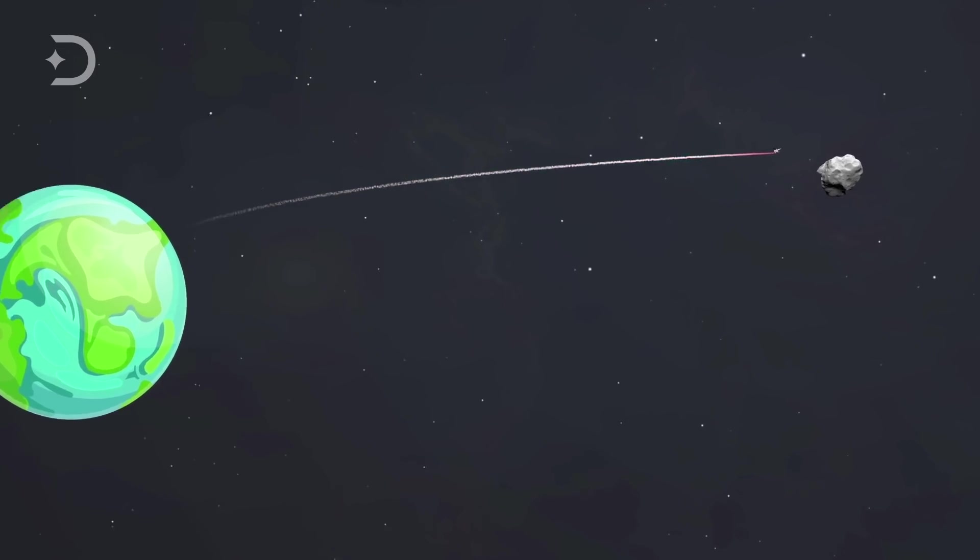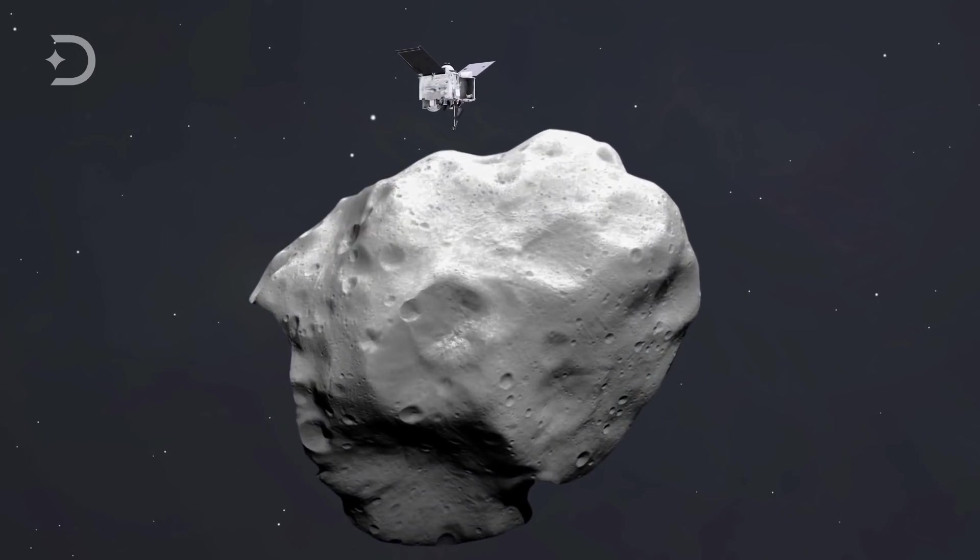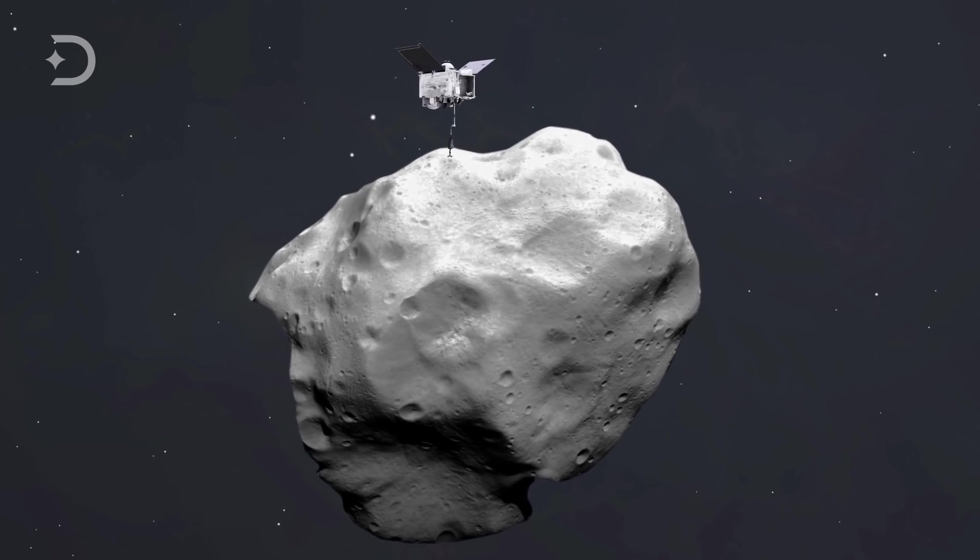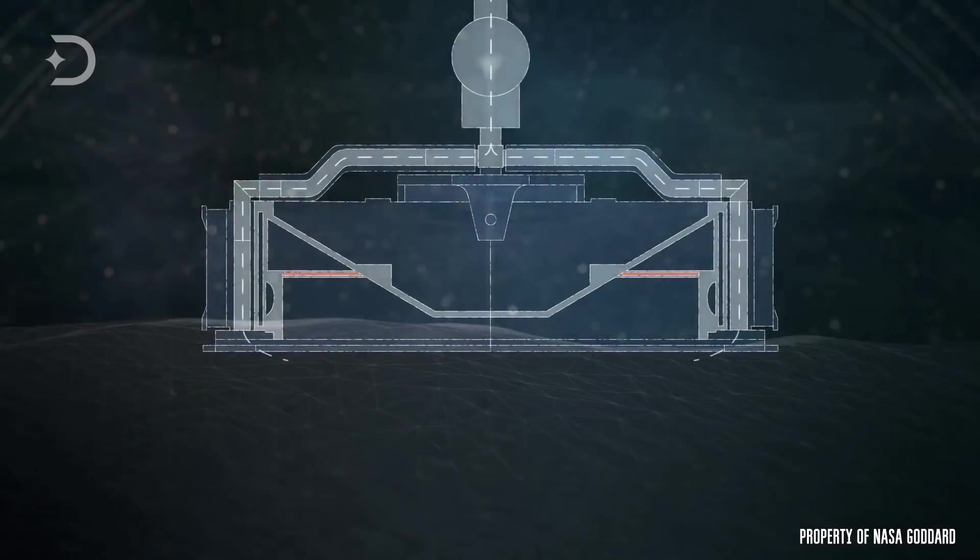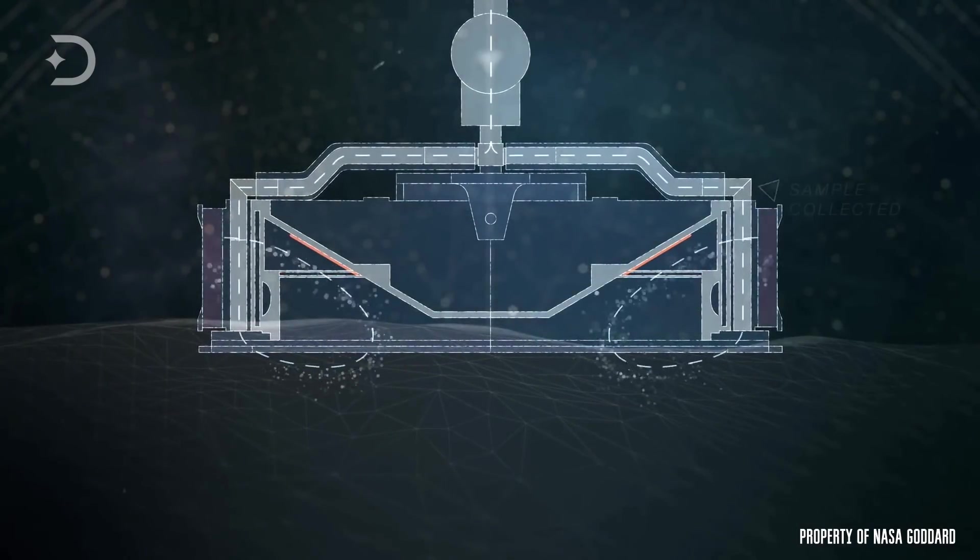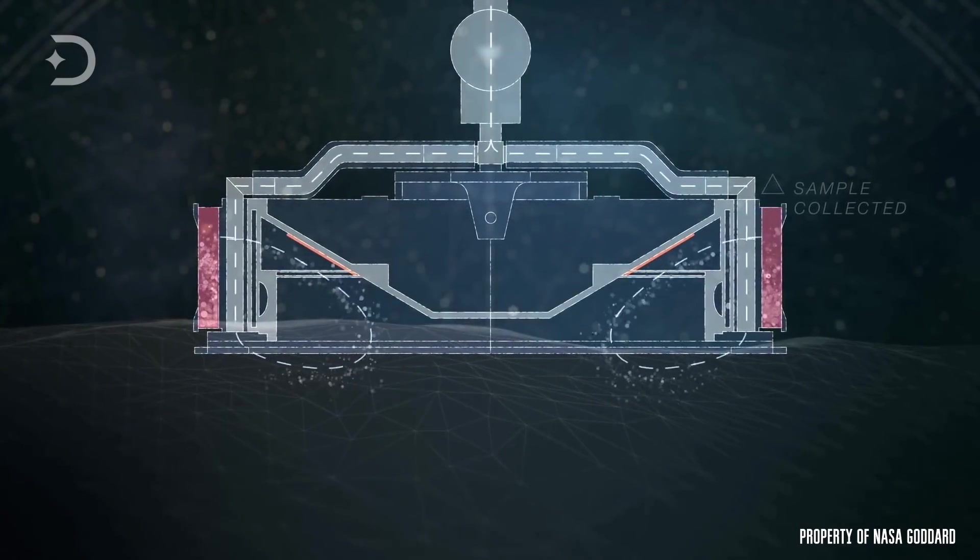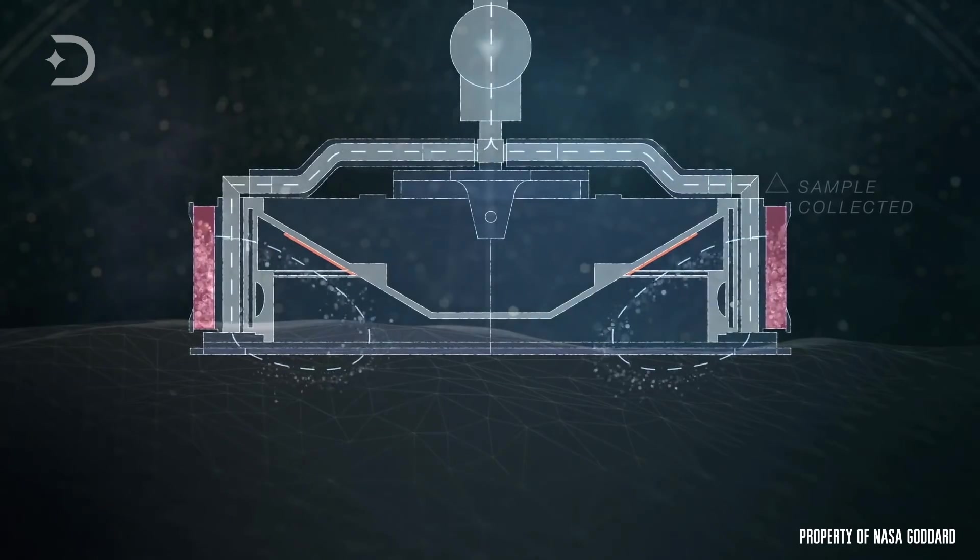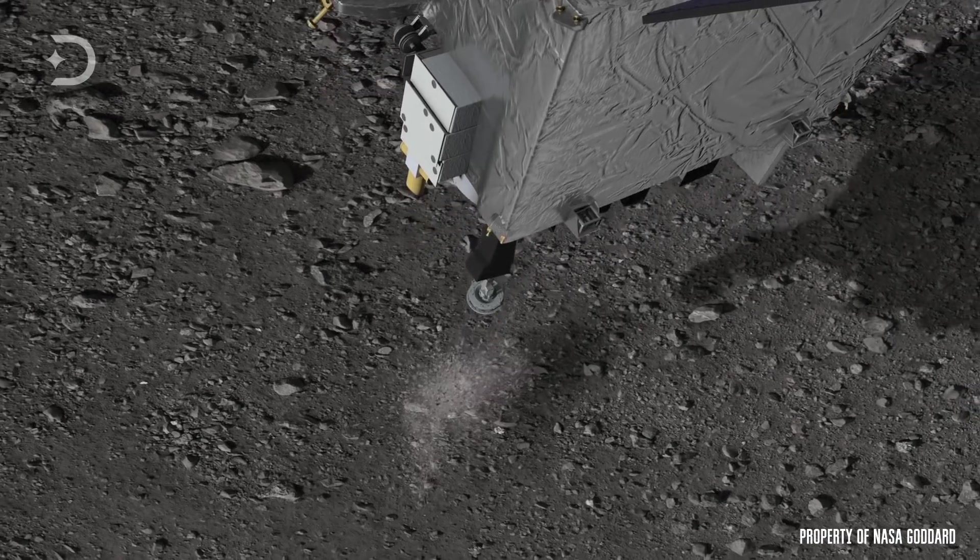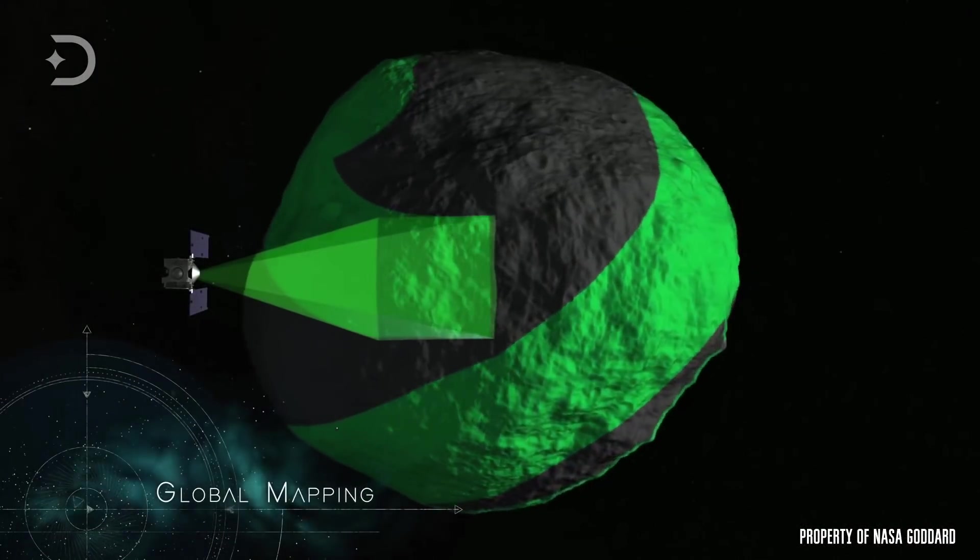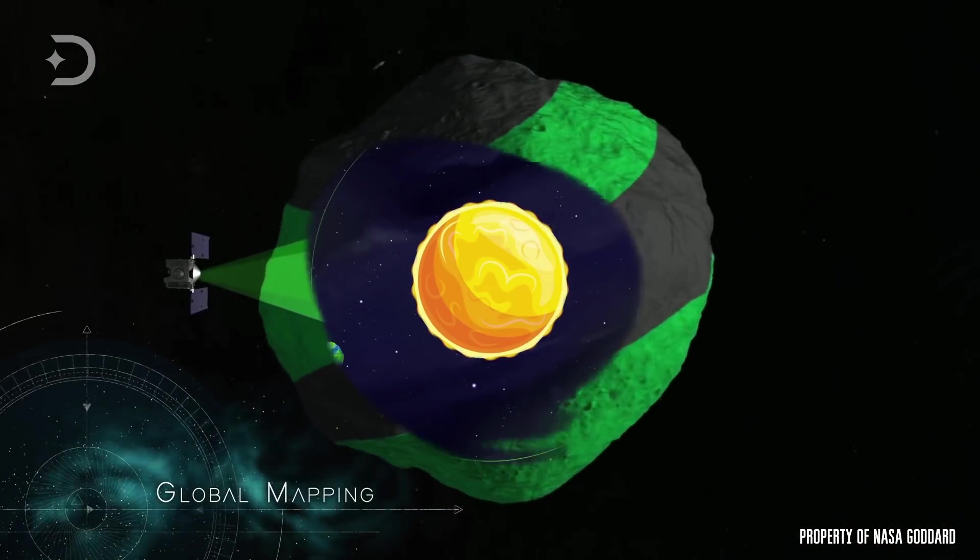One of those reasons is that it is possible that Bennu could hold information on how life could have taken a foothold on Earth. NASA also hopes to see what kind of resources could be mined from asteroids of this type that fly close to the planet. Another reason is to determine the composition of the asteroid and give scientists an idea of how the asteroid could be destroyed, since there is a chance that it could impact the planet.